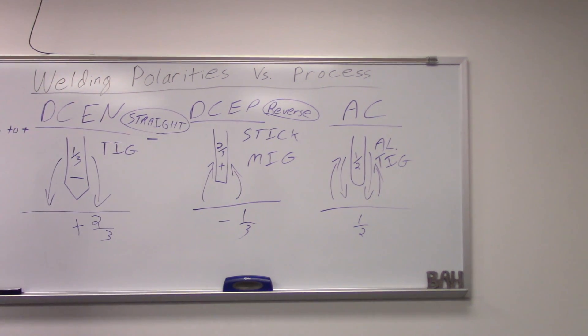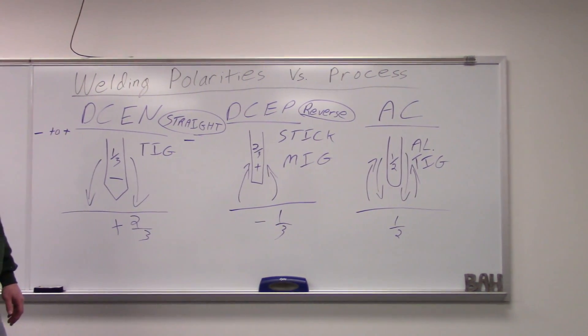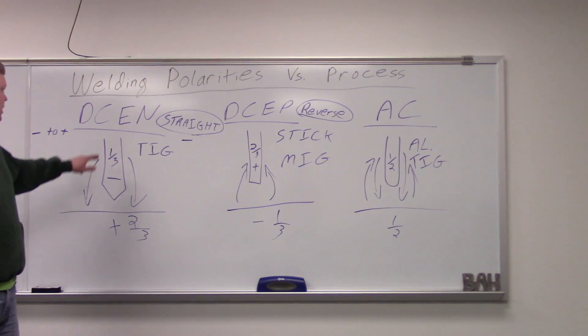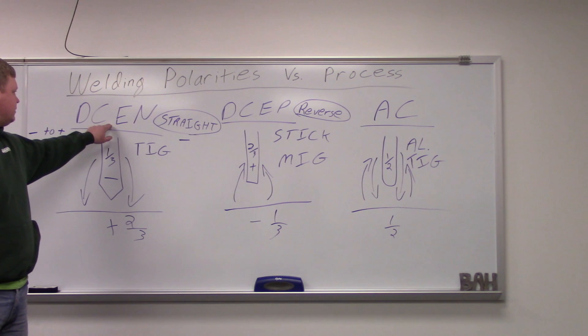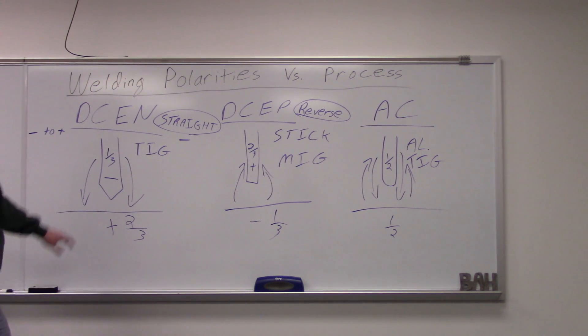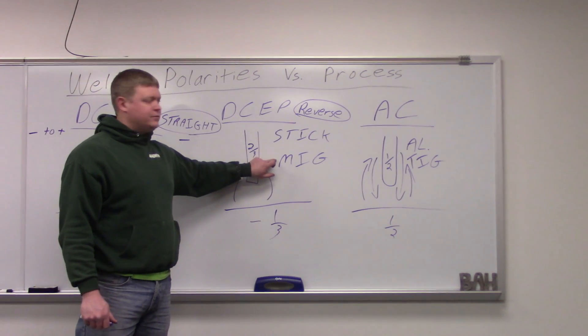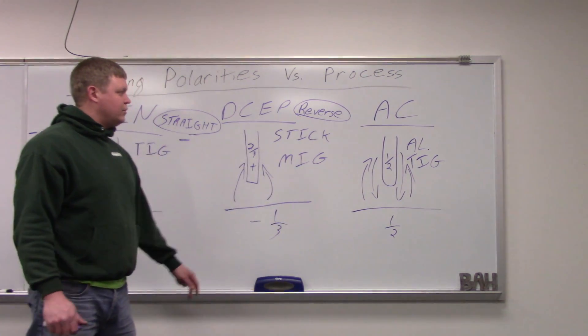So there it is, DCEN, DCEP, and AC. There are certain flux cord wires that you can put direct current electrode negative on, and it'll say that right on the box. Usually it'll be an inner shield, not a dual shield. But for the most part, direct current electrode negative is for TIG, direct current electrode positive is for stick and MIG, and AC is for aluminum.